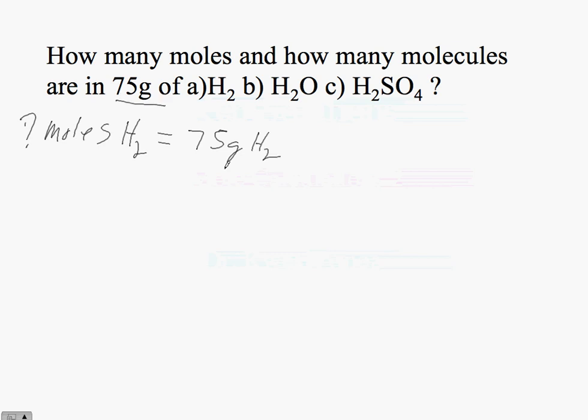75 grams come from what's given, and the way that we answer this is we know that for every one mole of H2 we have 2 grams of H2. Grams of H2 cancel out and our answer is 37.5 moles of H2. Now the question might be where did you get the 2 from? Well you know from the periodic table that 1 atom of hydrogen is 1, and we have 2 of those, so 1 plus 1 gives us our 2.